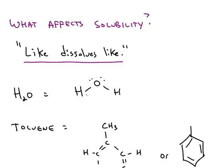If you remember your Lewis structure for water, you know that water is a polar molecule because of the electron geometry around the central oxygen being tetrahedral, and those lone pair electrons being about 109 degrees apart from each other makes the molecule polar.